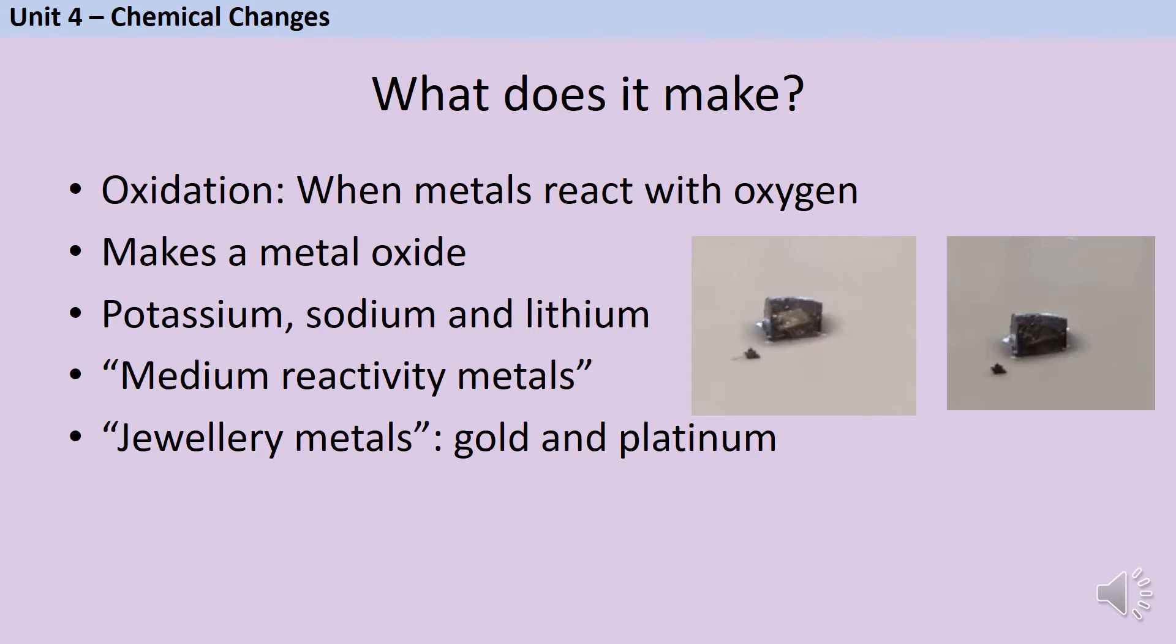When metals react with oxygen, they undergo a reaction called oxidation and they make a product called a metal oxide. We can loosely divide our metals into three groups based on how easily they make these metal oxides.